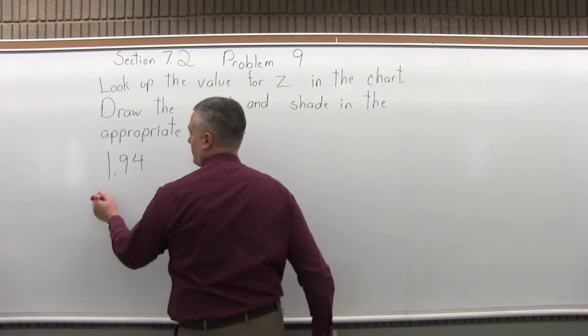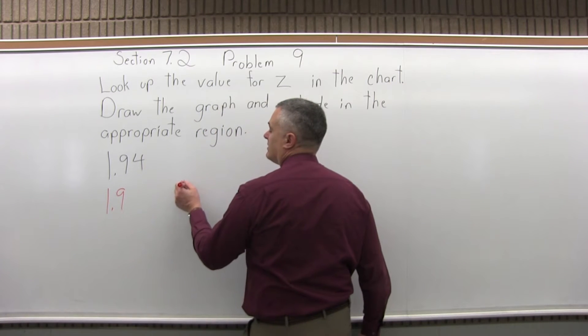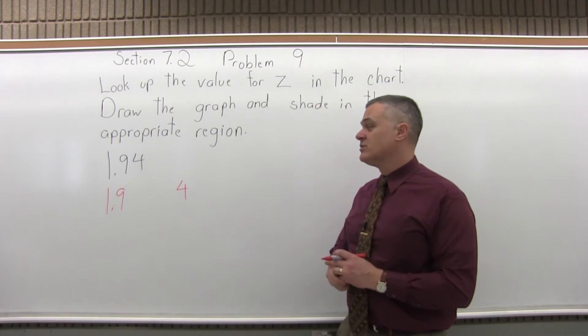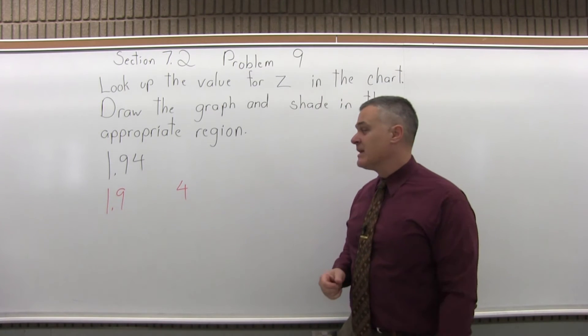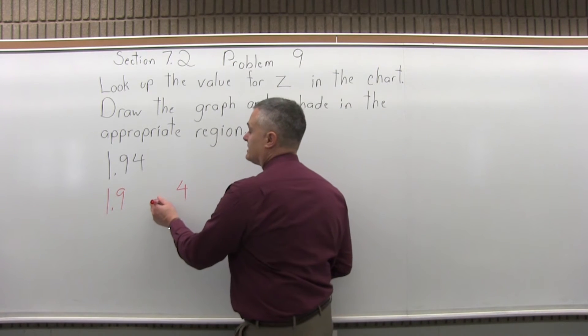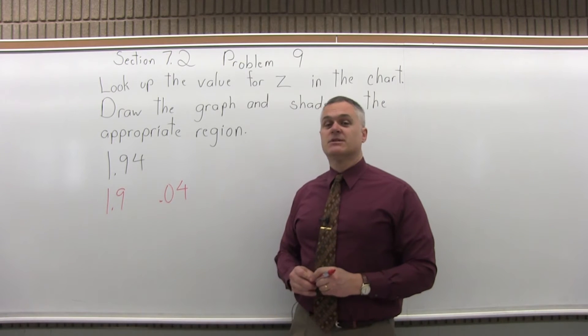The rightmost digit is a four. So I split the number into 1.9 and then four. So I took the rightmost digit and I pulled it off. This splits the number into two parts and that's step two. Step three, put a .0 in front of the rightmost digit that we pulled off. So the four gets written as a .04.